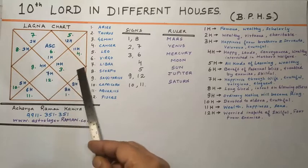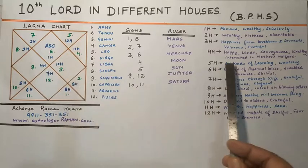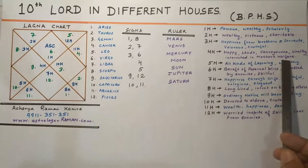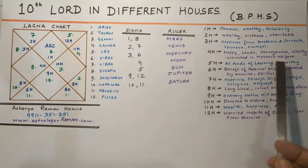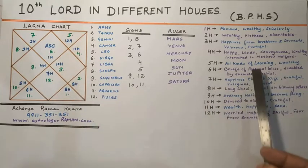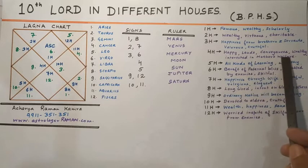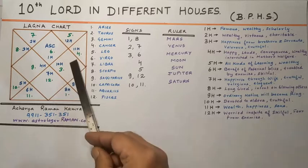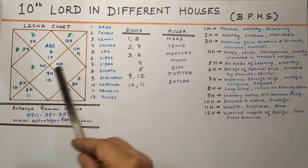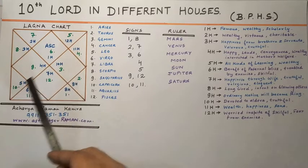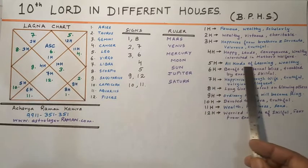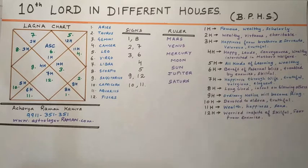If the 10th Lord is placed in the 4th house, the native will be happy, always interested in his mother's welfare, will lord over conveyances, lands, and houses, and be virtuous and wealthy.